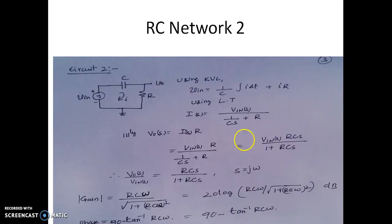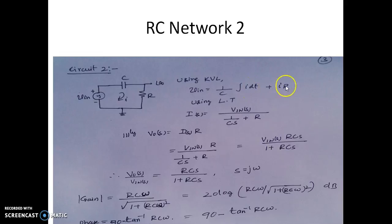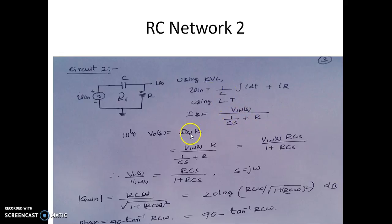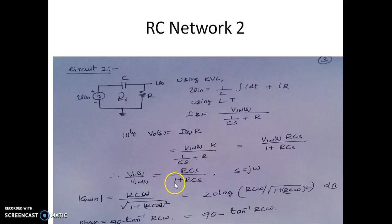Now let us look at the second circuit. Compared to circuit 1, it is just the interchange of the positions of C and R. Again using KVL, the input voltage equals the drop across the capacitor plus the drop across the resistor: (1/C)·∫I dt + I·R. Using the Laplace transform, the current I(S) = VIN(S) / (1/CS + R). Since V_out is the voltage drop across R, we ultimately get the transfer function for this network as RCS / (1 + RCS).